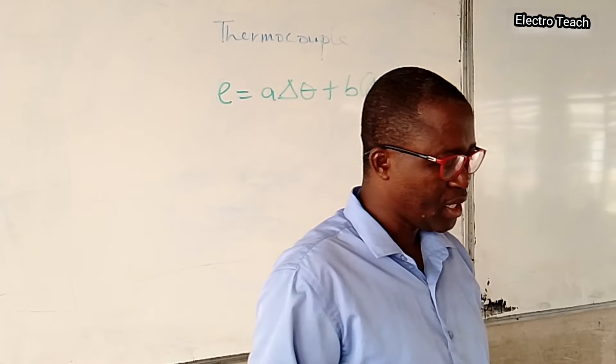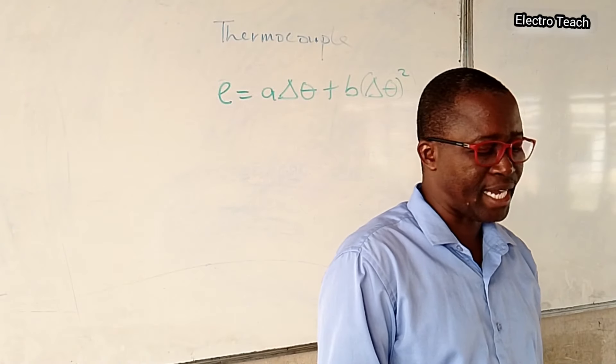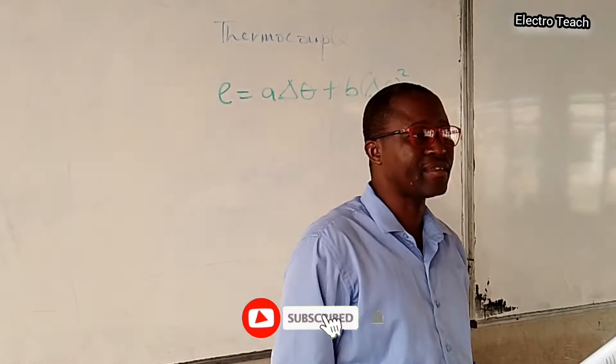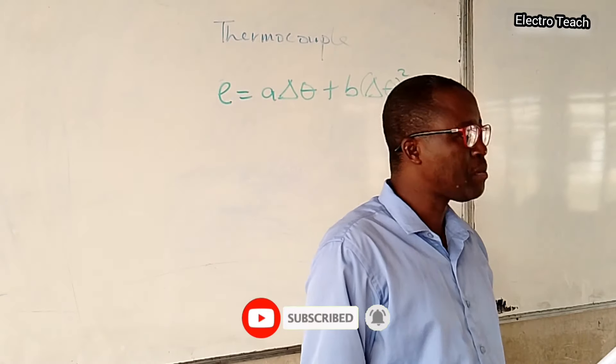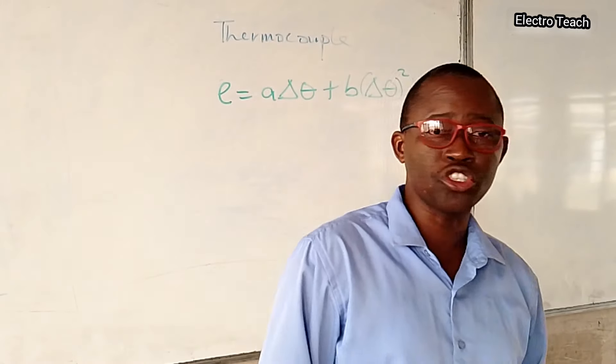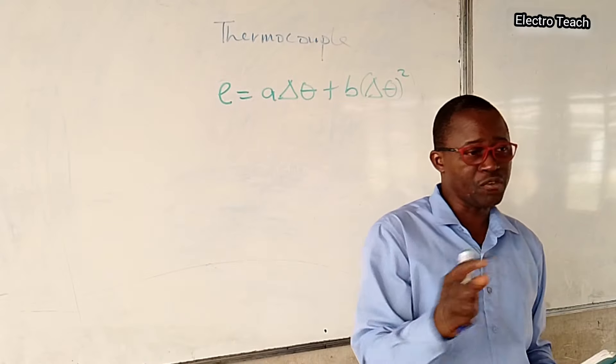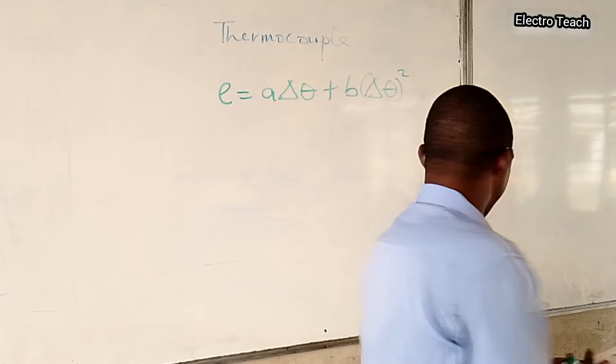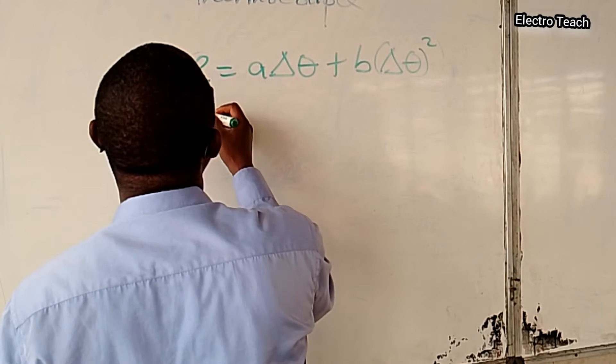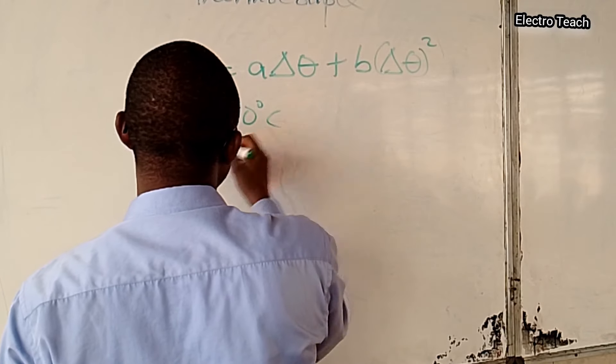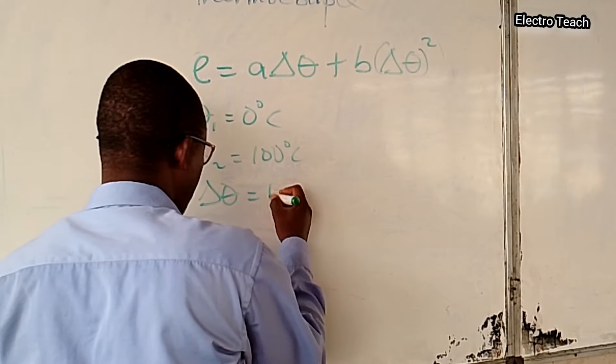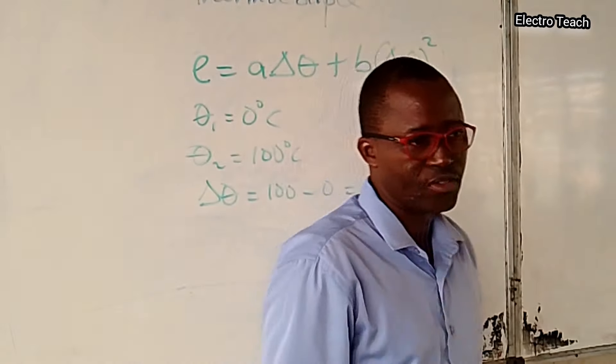The question says, if a thermocouple instrument is made from two metals maintained at 0 degrees C and 100 degrees C respectively, and the thermoelectric constants are 50 microvolts per degree Celsius and 105 microvolts per degree Celsius, determine the EMF produced at the junction of the two metals. So the values given are 0 degrees C and 100 degrees C. Those are the temperature at the reference point and the sensing point. So we have temperature 1 equals 0 degrees C, temperature 2 equals 100 degrees C. So that we can say delta theta equals 100 minus 0. That means 100 degrees Celsius.